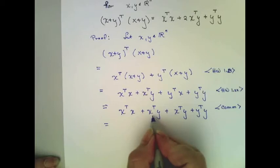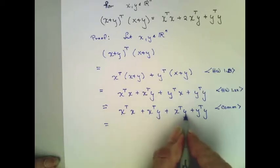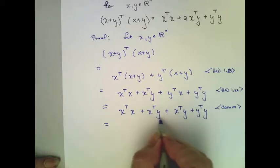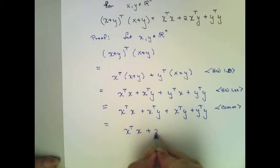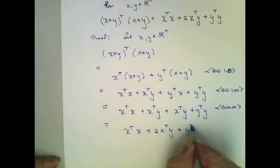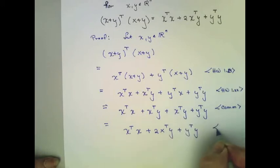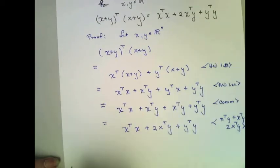But x transpose y plus x transpose y is 2 times x transpose y. So we're done, and it's always true.